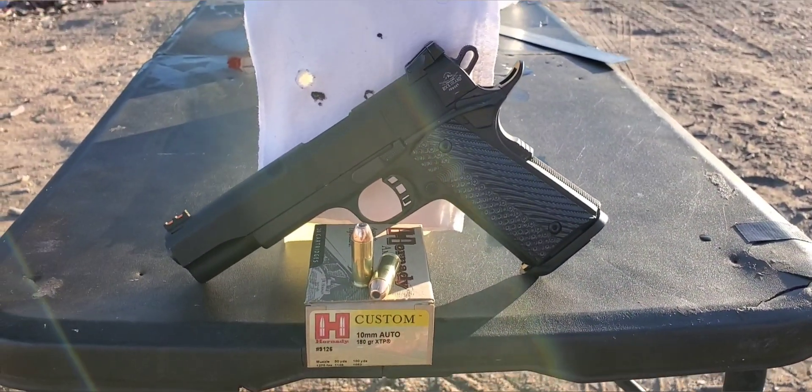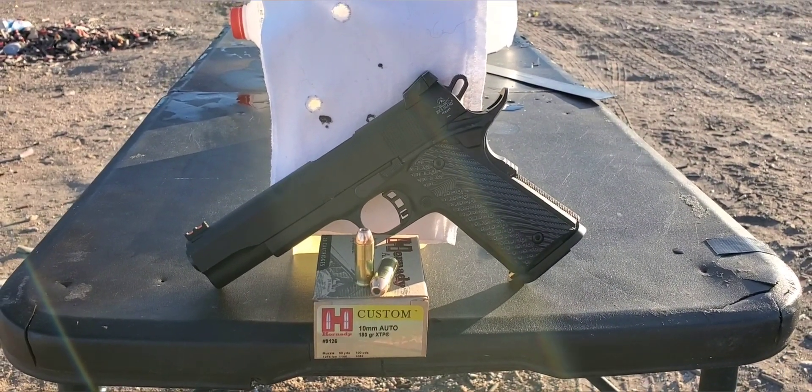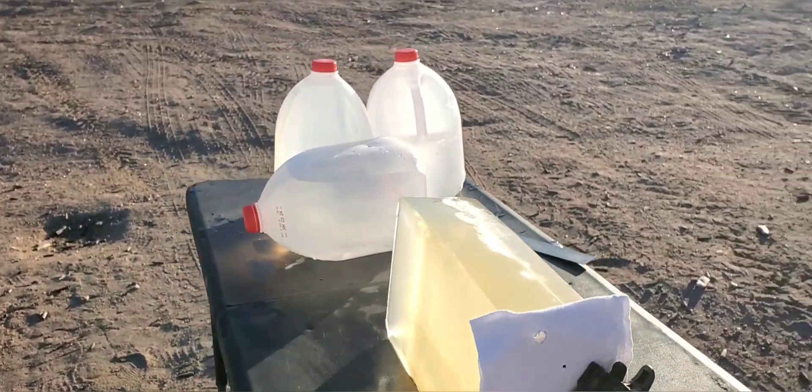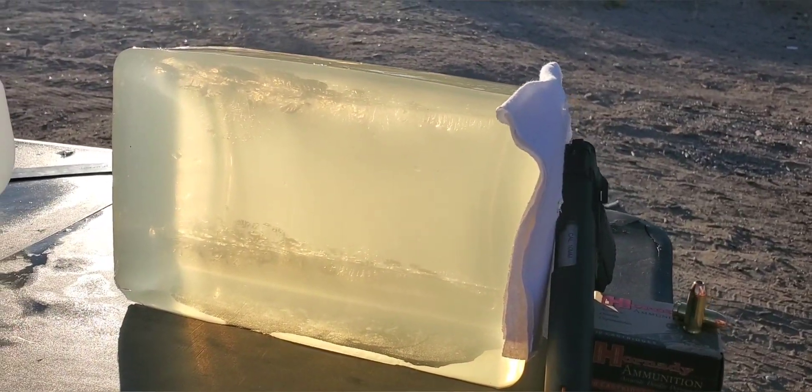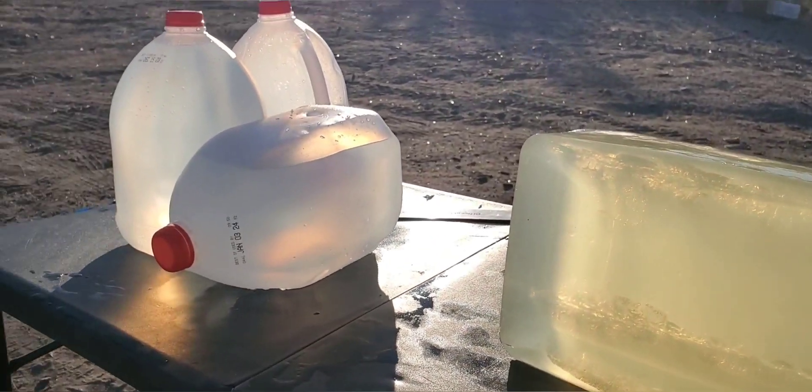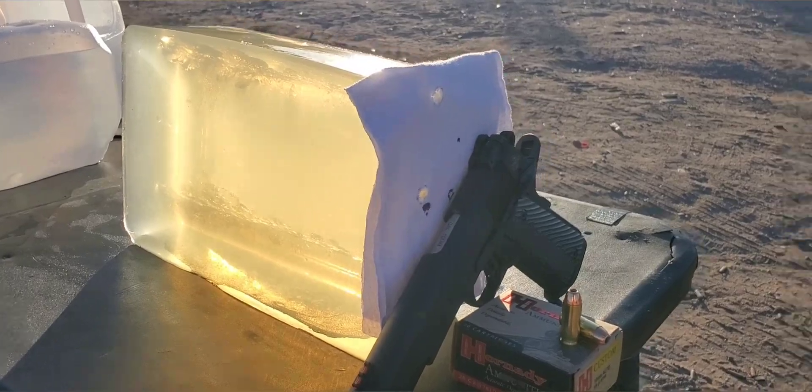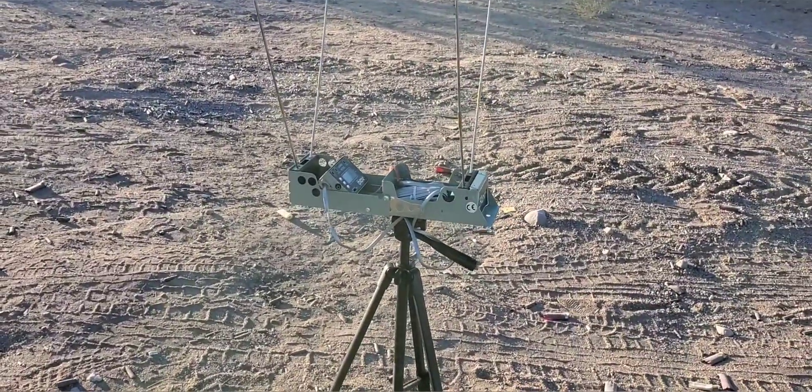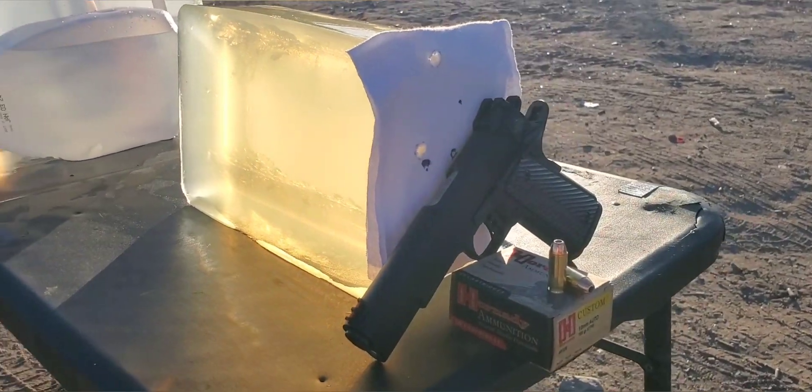So today we're going to be trying out of our 5 inch Rock Island Ultra FS. We'll see what kind of numbers we get on that. It looks like we have just enough room here in this block to sneak another one in there. So that is a 10% block. Do have our jug backstop just in case we get those pass throughs. And our four layers of cotton t-shirt on the front. So like always we'll set our chronograph up so we can hopefully get those impact velocities. We'll see how this one does. Here we go.